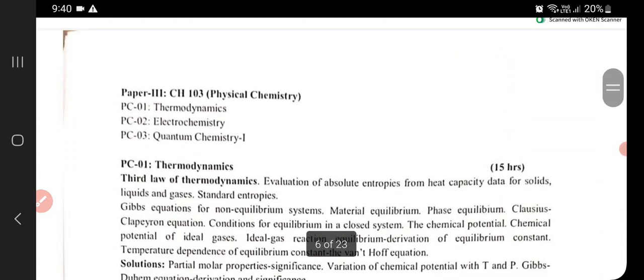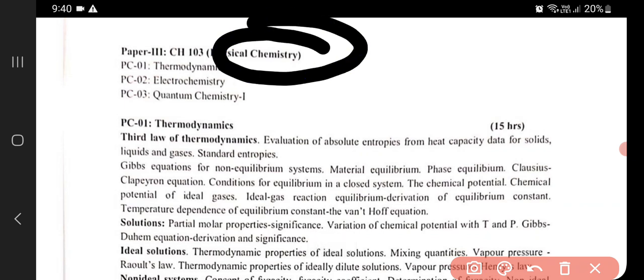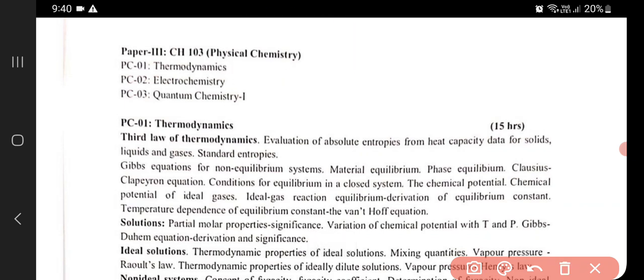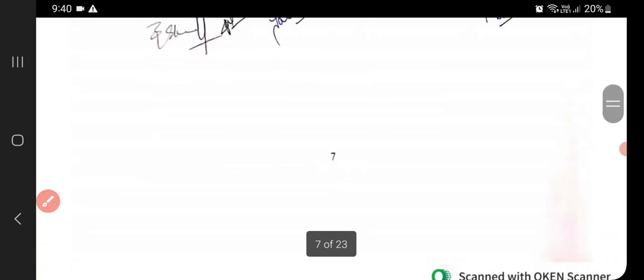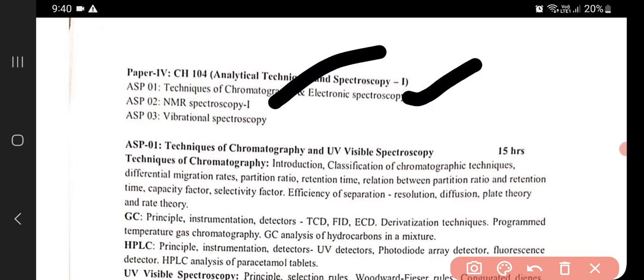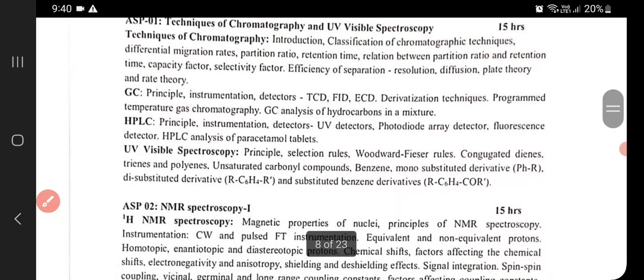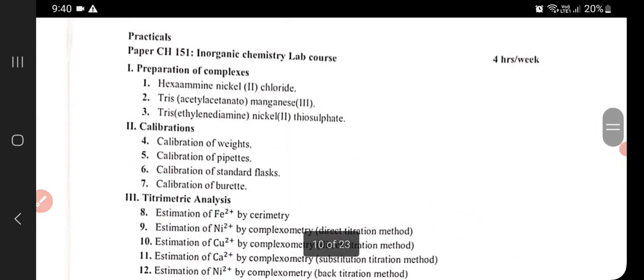Paper 3 is Physical Chemistry, where you'll be studying Thermodynamics, Electrochemistry, and Quantum Chemistry. Paper 4 is Analytical Techniques and Spectroscopy, covering Chromatography, Electronic Spectroscopy, NMR Spectroscopy, and Vibrational Spectroscopy. You'll be having practicals for these papers.